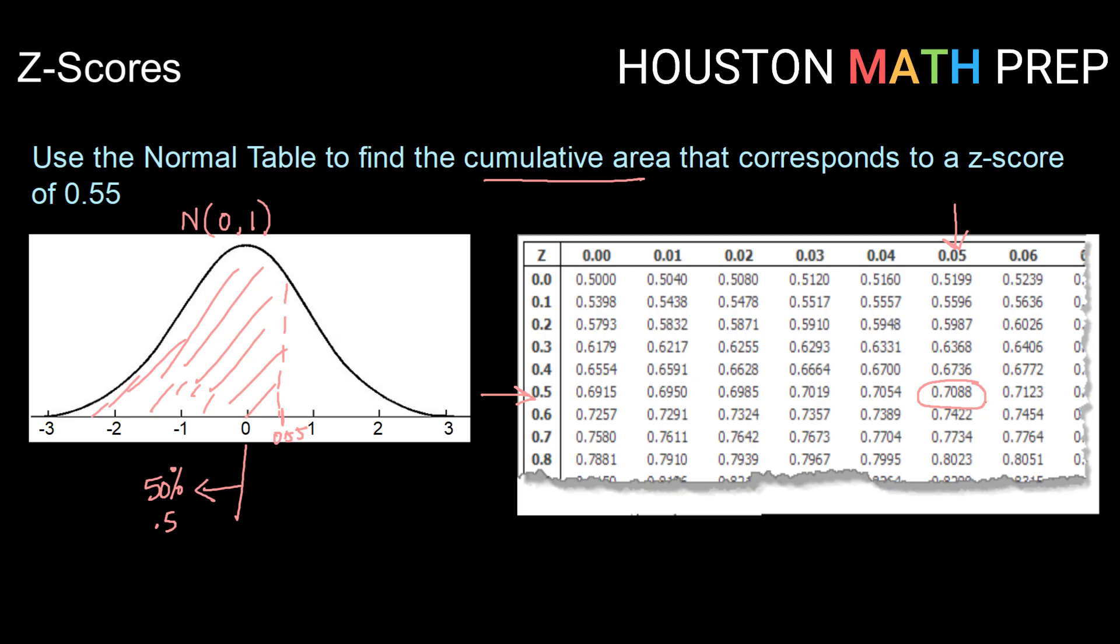And that is the area that lies below 0.55. So our probability of finding an x value that is less than 0.55 on the normal distribution is 0.7088. Or another way of saying that is that about 71% of our data values lie below a z-score of 0.55.